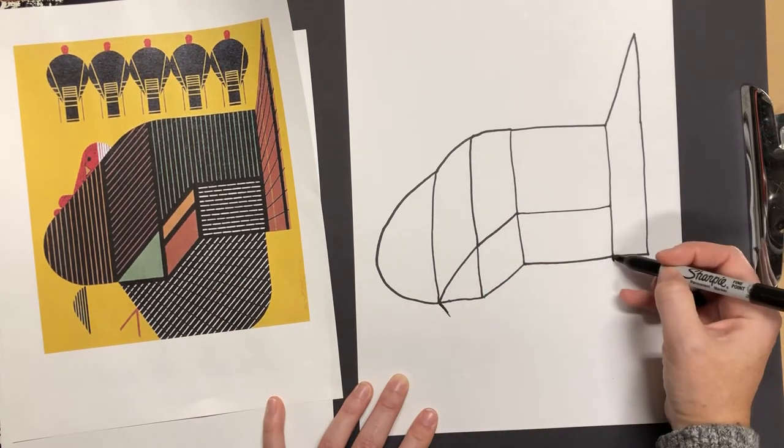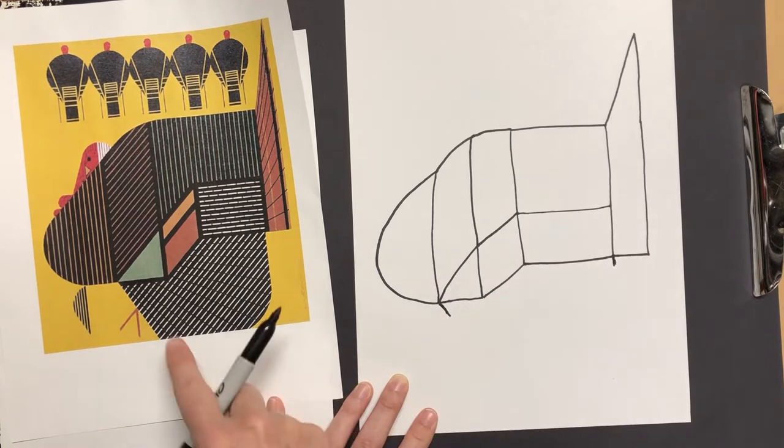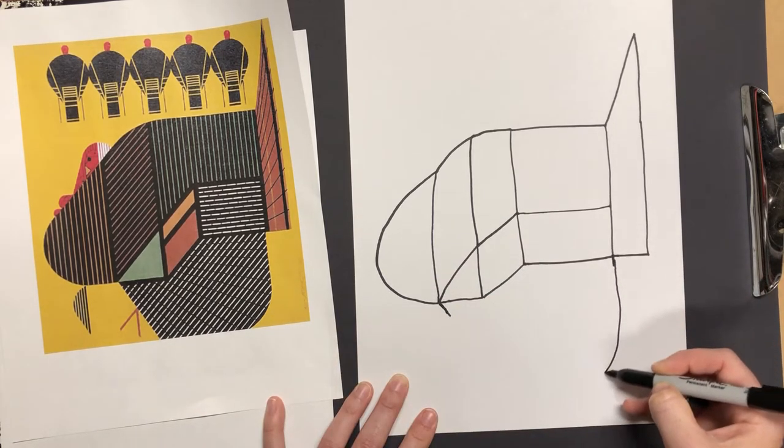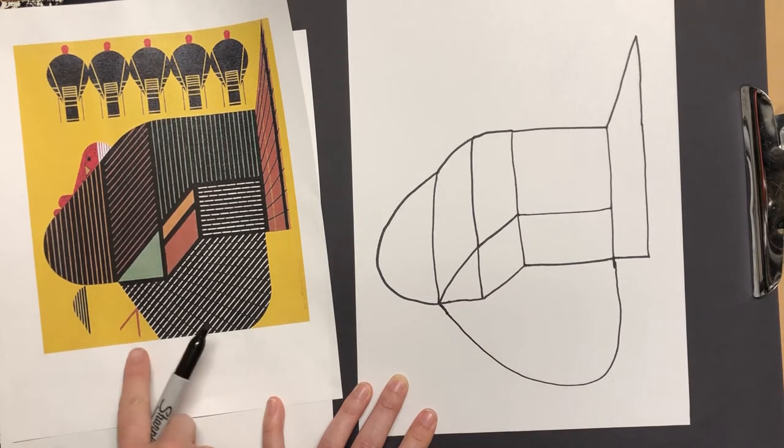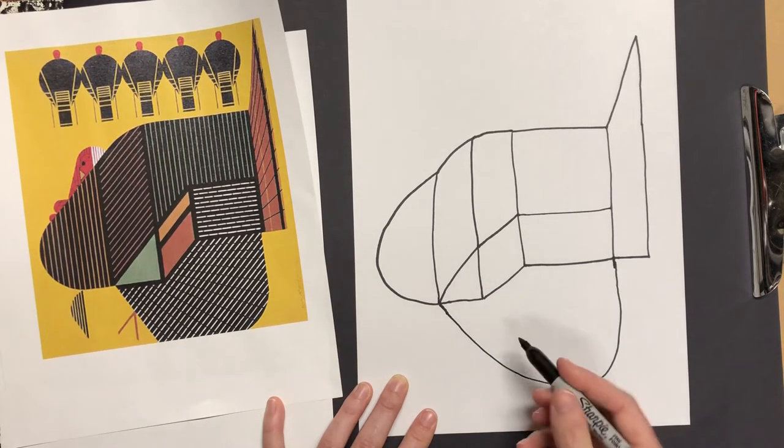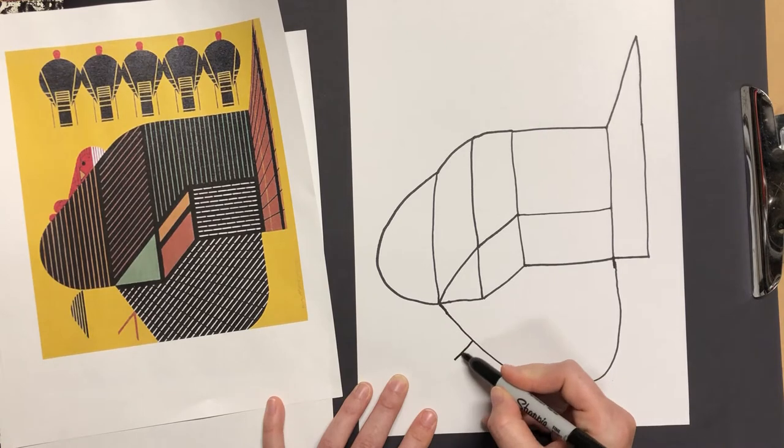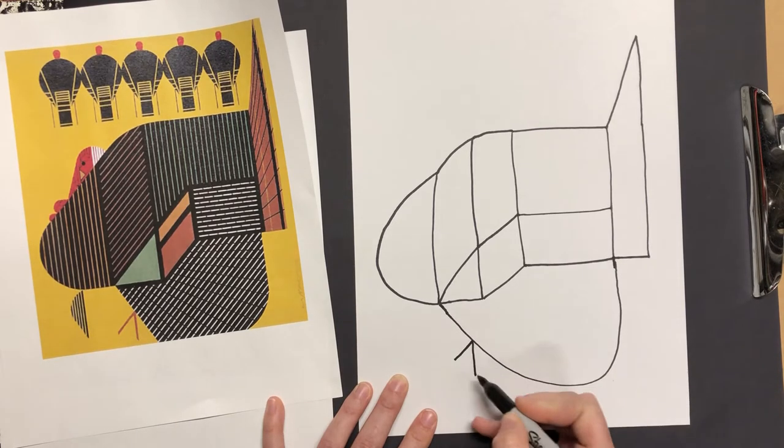So if you make those little lines to help you, you can figure out where the wing goes. There we go. Right here is the little foot. It almost looks like the top of a triangle. It doesn't have a line on the bottom.